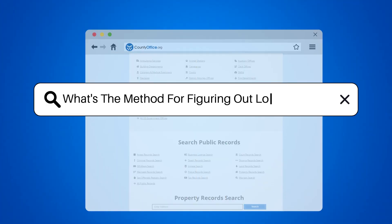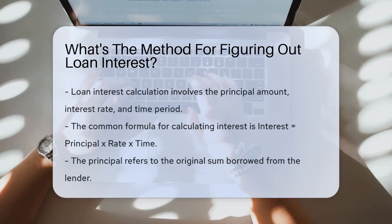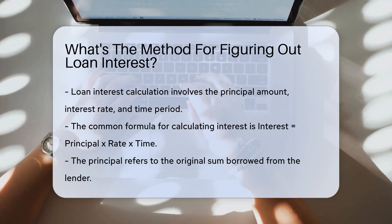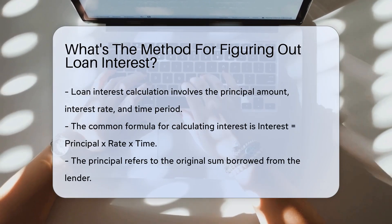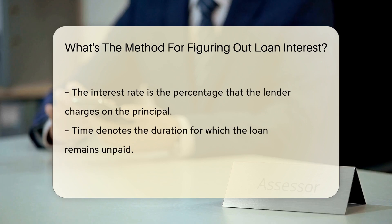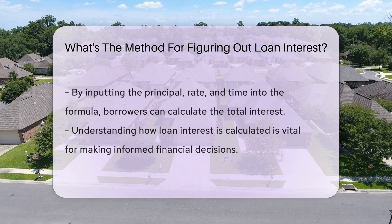What's the method for figuring out loan interest? Loan interest is typically calculated using the principal amount, interest rate, and time period. The formula commonly used is: Interest = Principal × Rate × Time. The principal is the initial amount borrowed, the interest rate is the percentage charged by the lender, and the time is the duration the loan is outstanding.